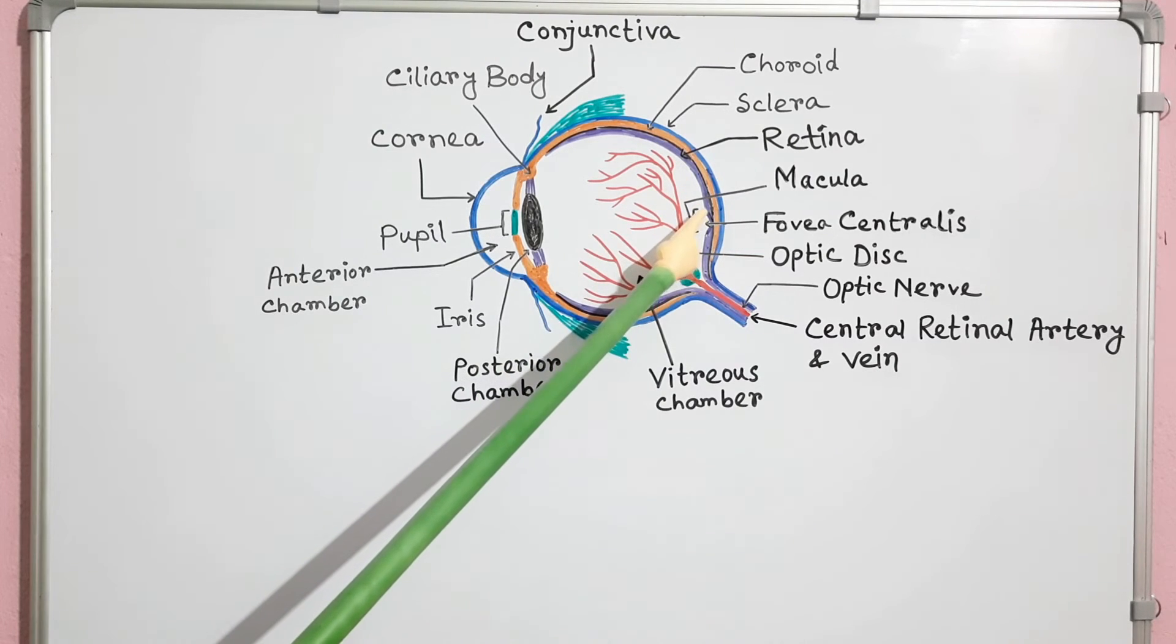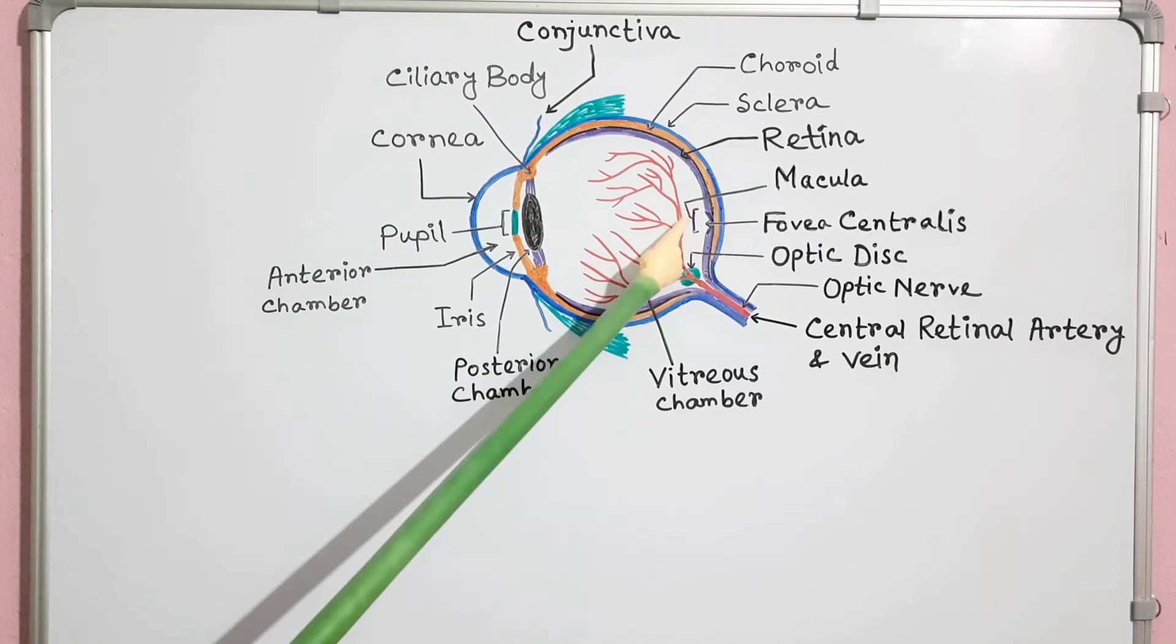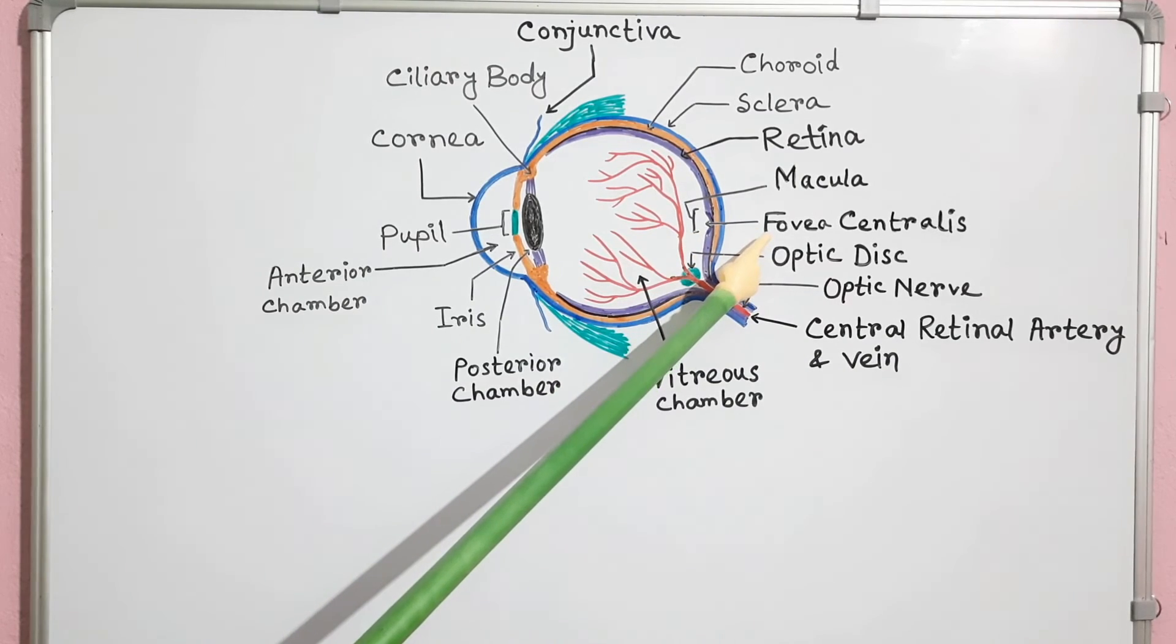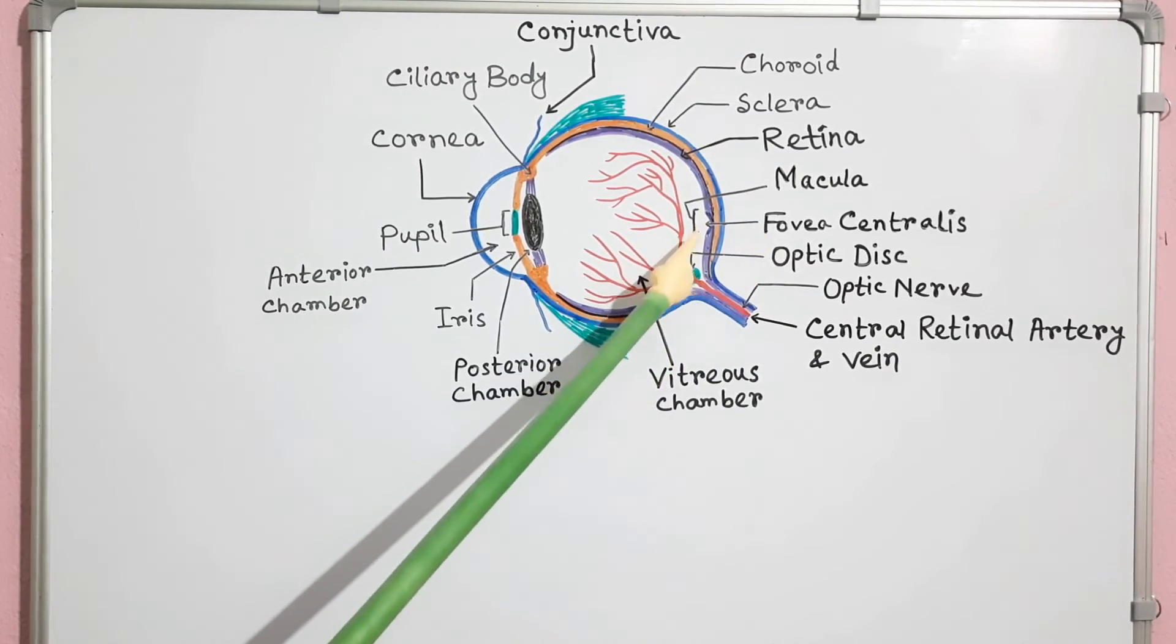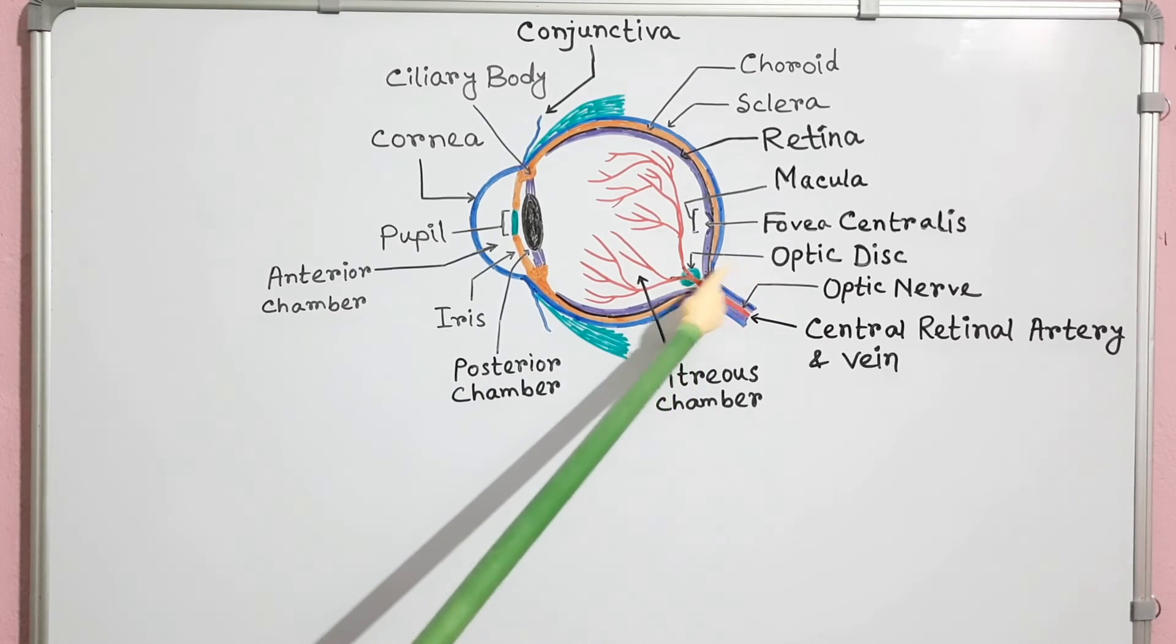Near the center of the posterior retina is a small yellow spot approximately 4 mm in diameter. It is known as the macula. In the center of the macula is a small pit known as the fovea centralis. Just medial to the macula is a white spot known as the optic disc.